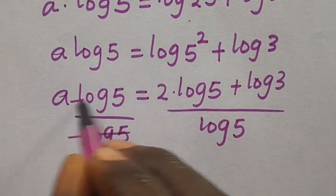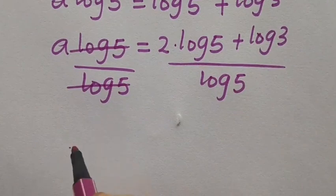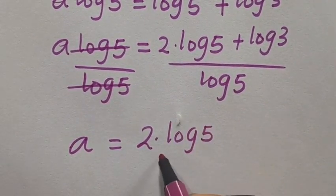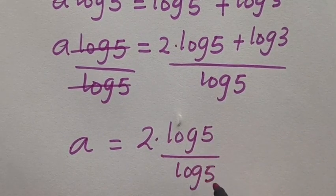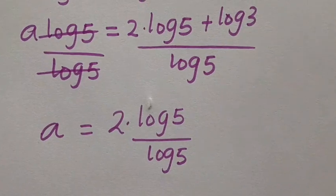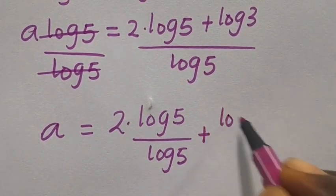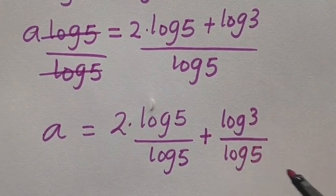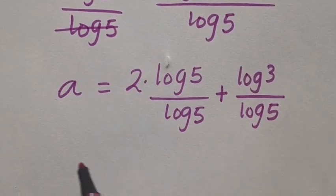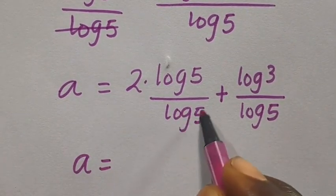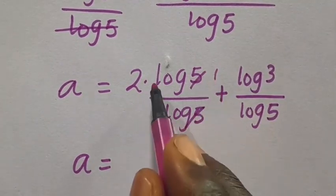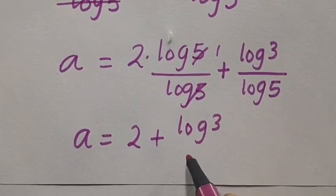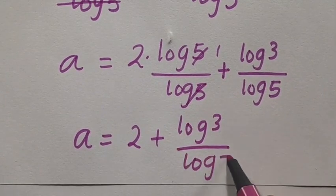Now let's divide both sides by log 5. This side and this side will cancel, so we have a equals 2 times log 5 divided by log 5, plus log 3 divided by log 5. This simplifies to a equals 2 plus log 3 divided by log 5.